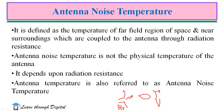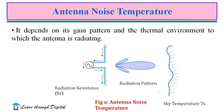Radiation resistance is a fictitious resistance which consumes maximum power radiation. So, antenna radiation resistance represents total radiation of the antenna. Antenna temperature is also referred to as antenna noise temperature, and it depends on its gain pattern and the thermal environment in which the antenna is radiating.